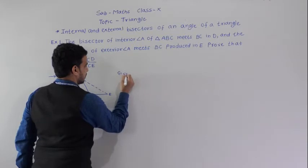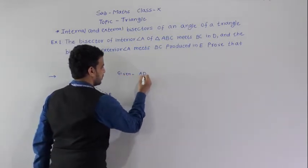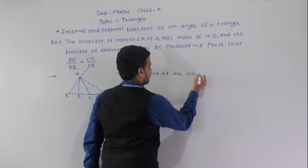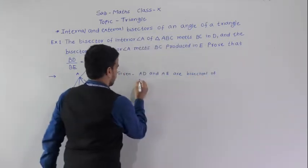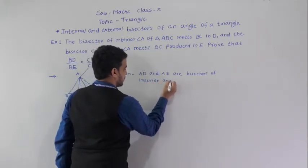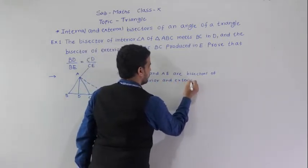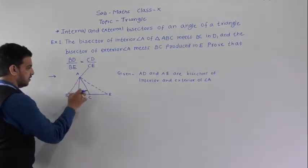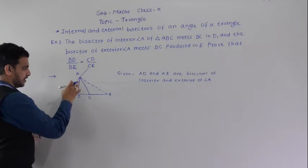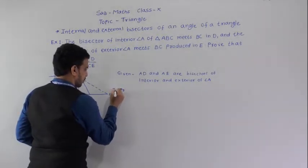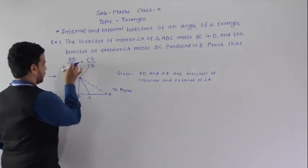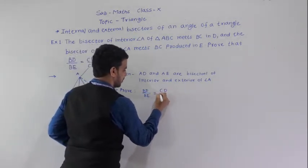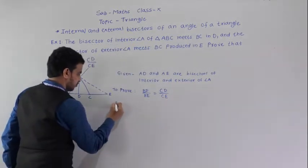So AD is the interior bisector and AE is the exterior bisector of angle A. We have to prove that BD/BE is equal to CD/CE.